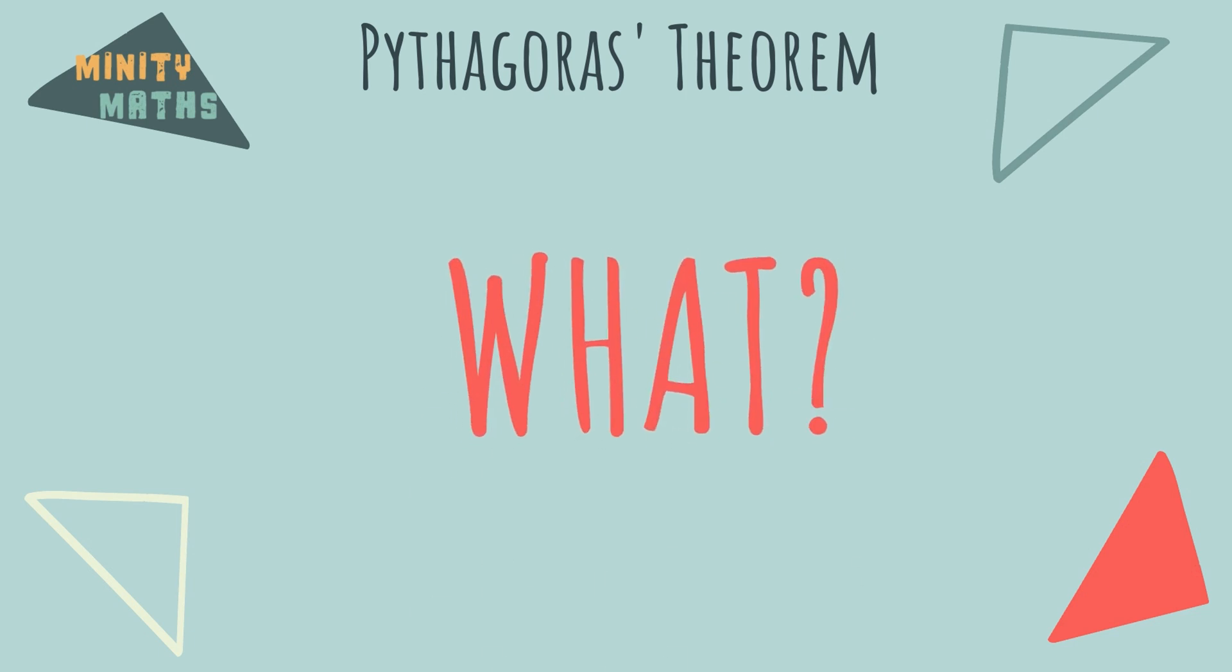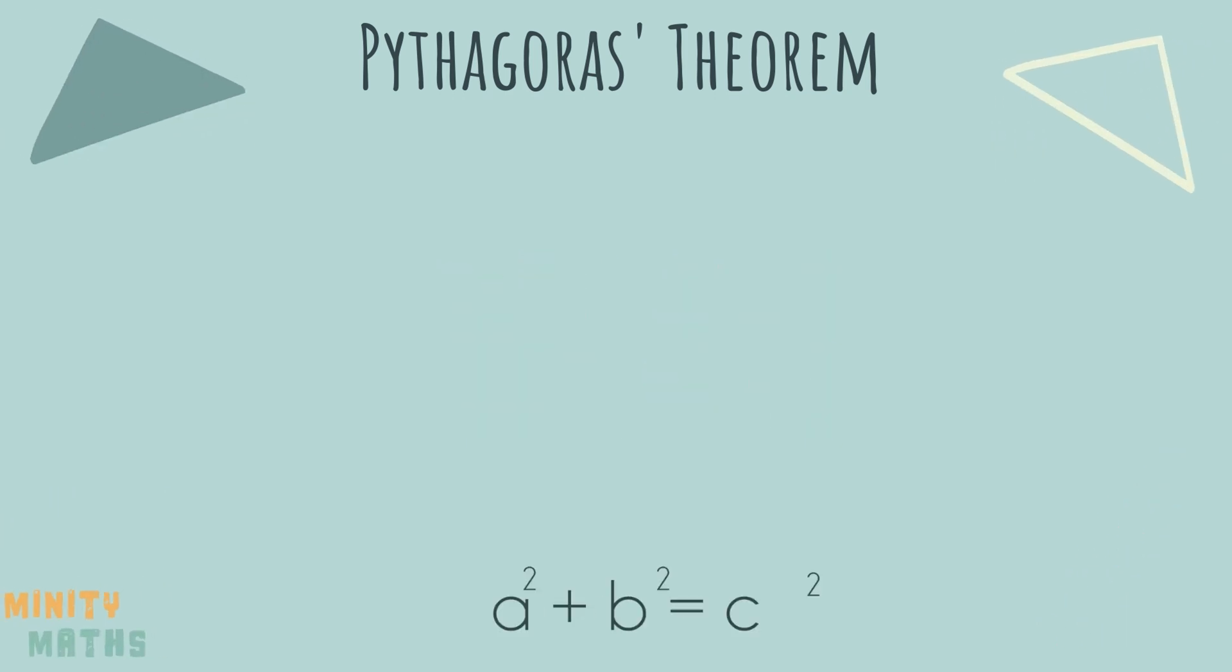But what does this mean? Well, it means that if we square the length of side a and square the length of side b, then add them together, it is equal to the square of side c.